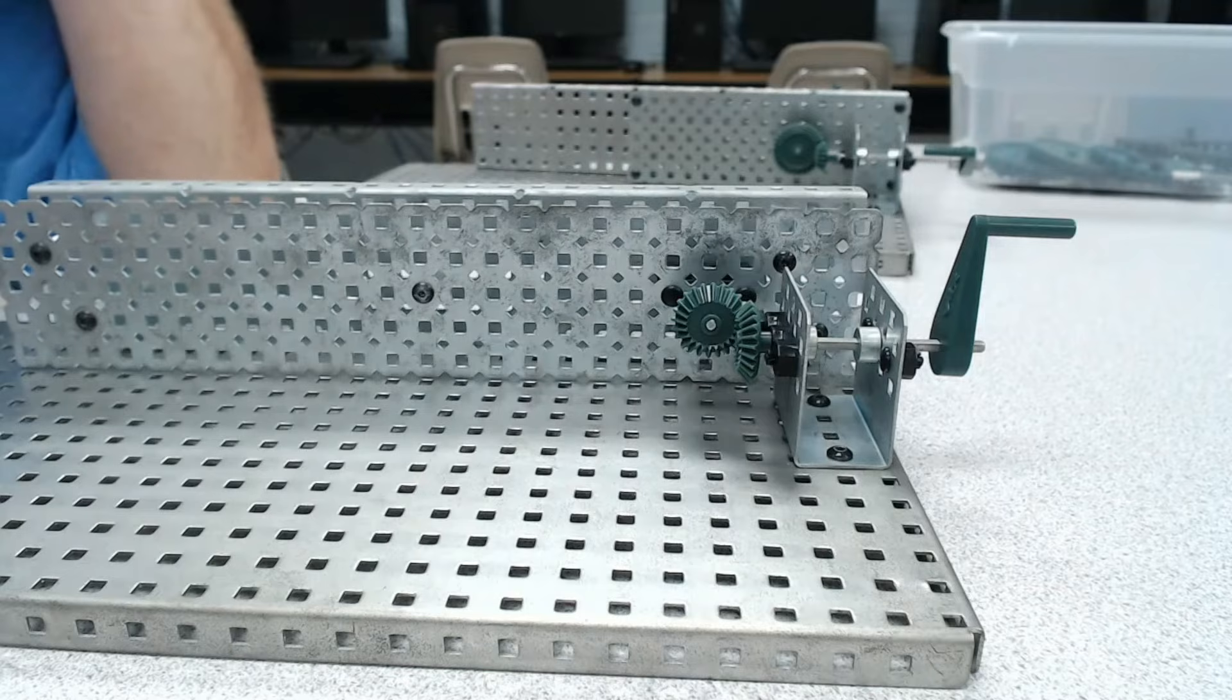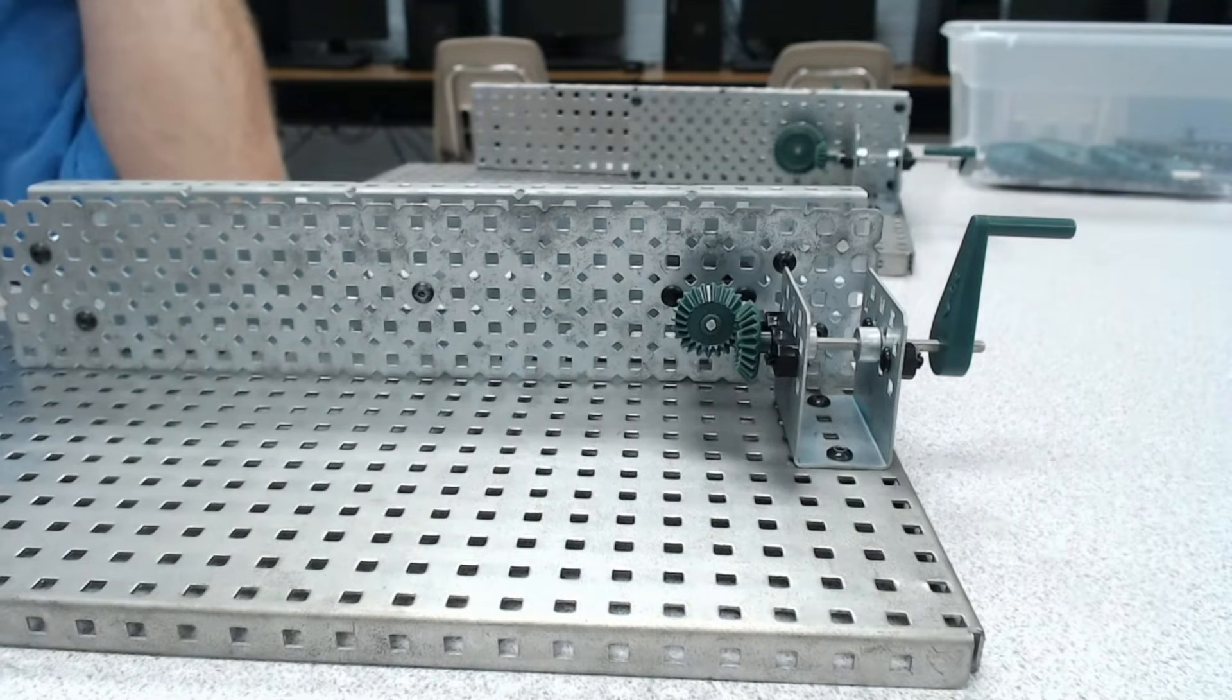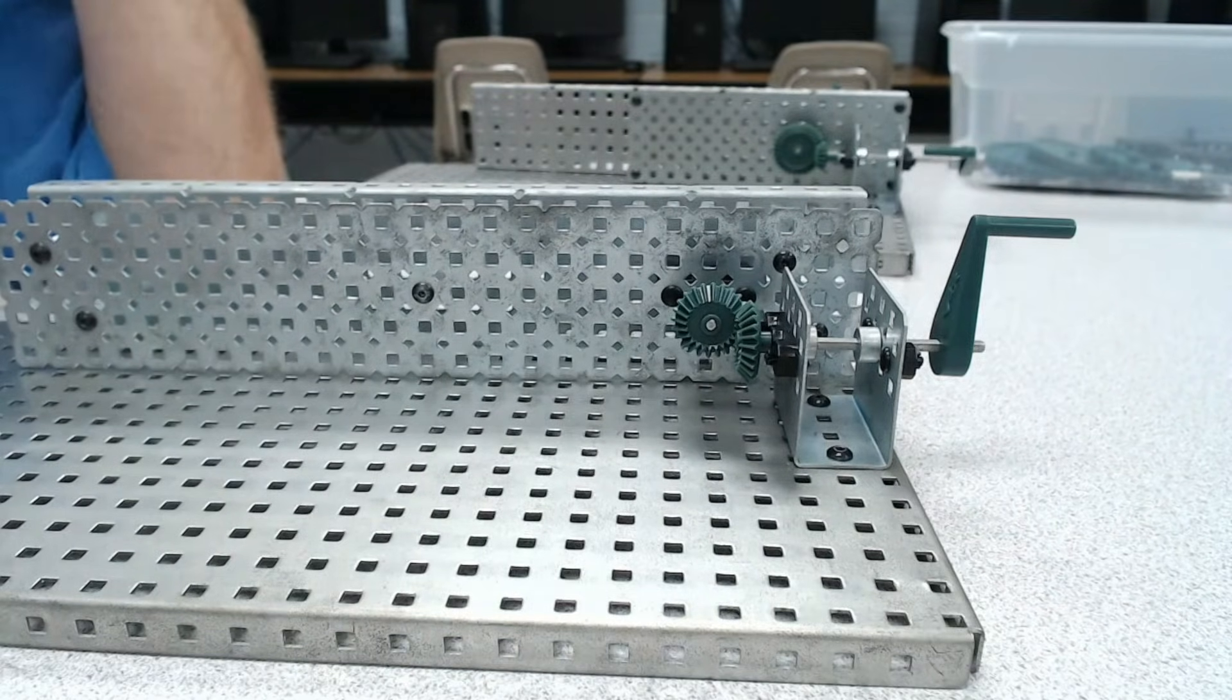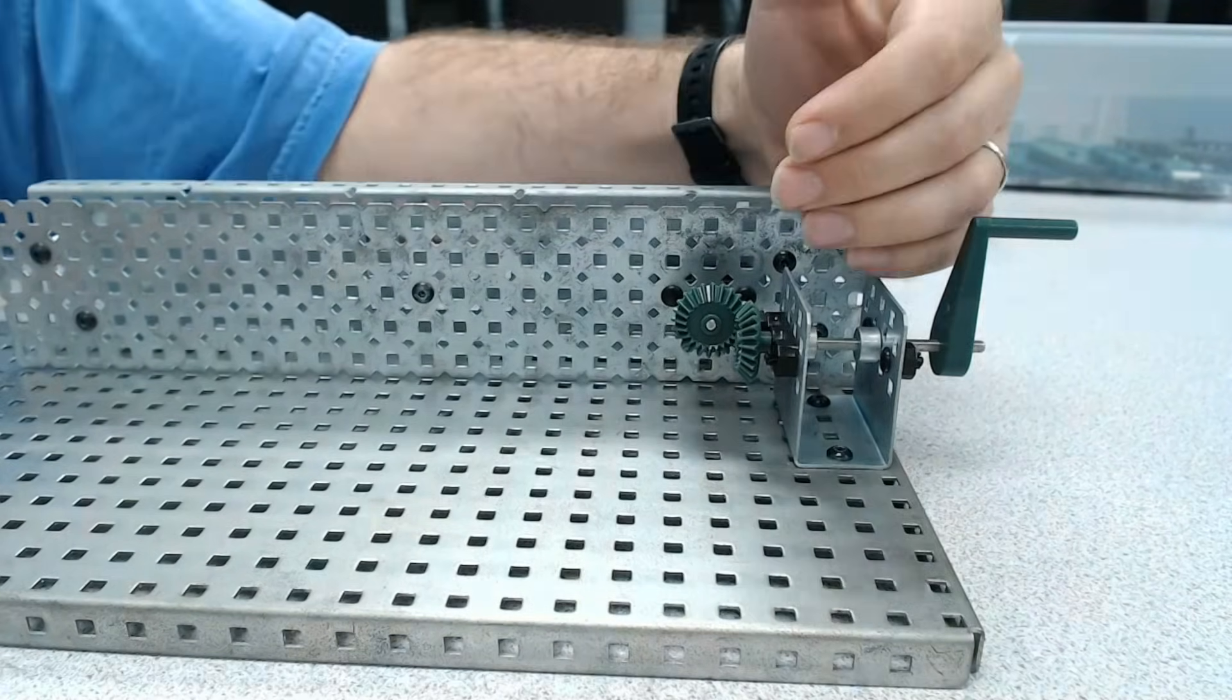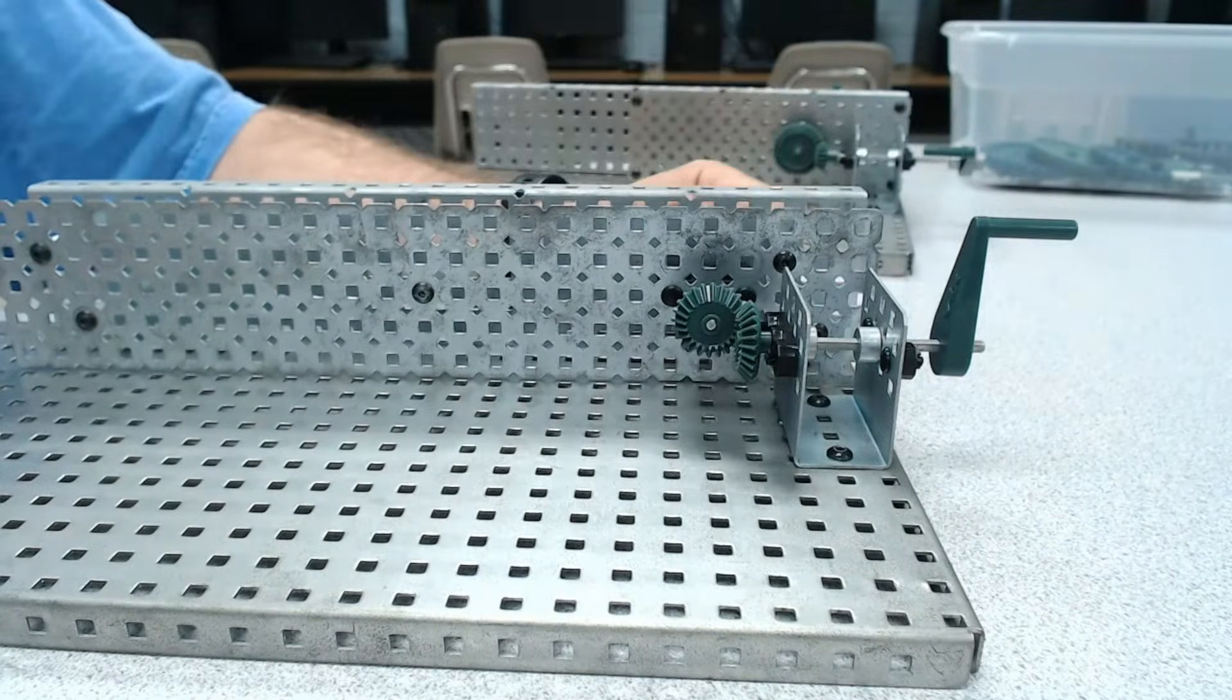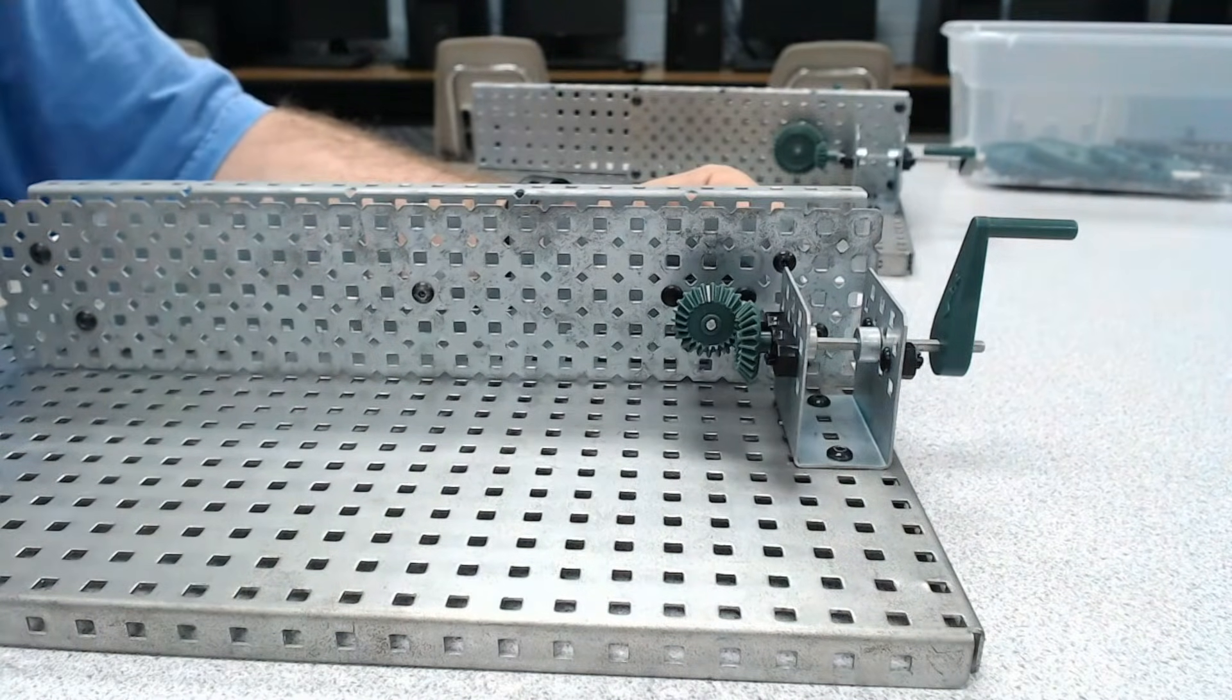A great example of that might be a windmill. A windmill would show a good example of the input being in one direction and the output being in a different direction.